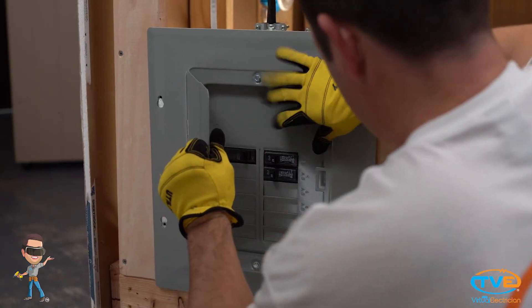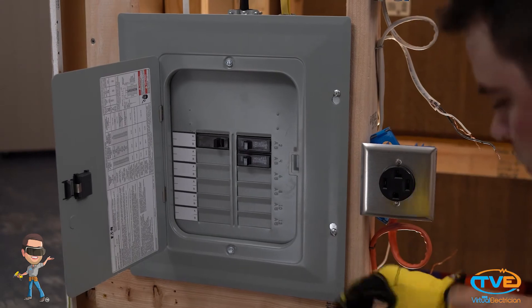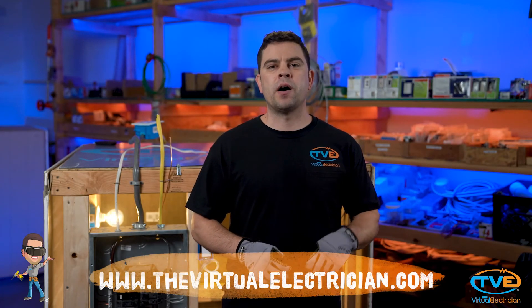Hook up the 6-3 wire in the main panel. Remove knockouts from sub-panel cover. Label the panel. Turn on the breaker and test your work. Please like this video and subscribe to our page for a link to 150 more.